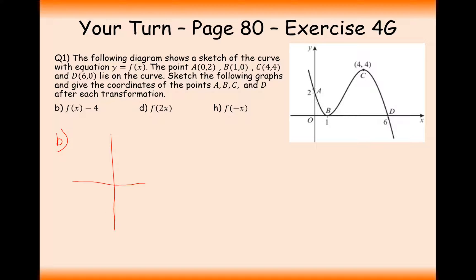Now let's use the coordinates to help us. The 2 is now going to move down to minus 2. The 1 is now going to move down to negative 4. The 4, 4 coordinate is now going to move down to 4, 0. And the 6 coordinate here is now going to move down to 6, minus 4.